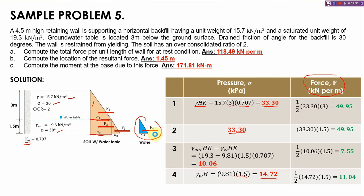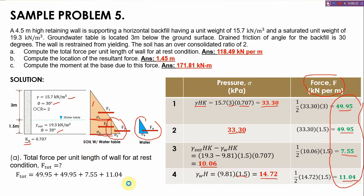To get the force, it's simply the area of the shape. Our F1 is one-half base times height, we get 49.95. For shape number 2, base times height, 49.95 also. For the third shape, it's triangular, one-half times 1.5 times 10.06 times 1.5, so 7.55. And lastly for the water, it's triangular, so one-half base times height, 11.04 kilonewton per meter. The first question is compute total force per unit length of wall, so we add these forces.